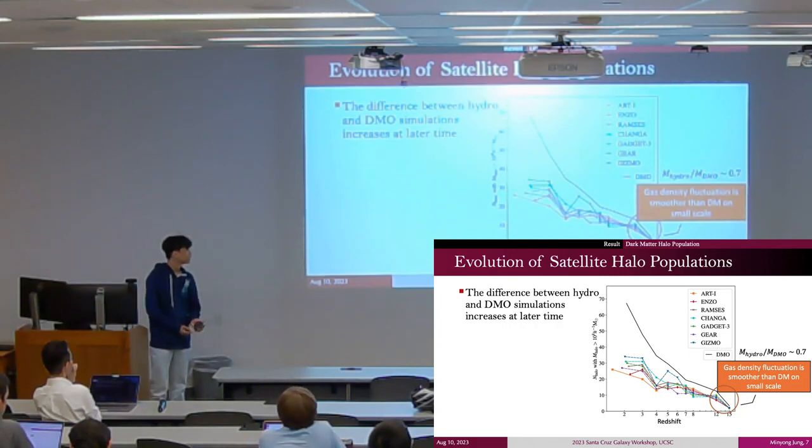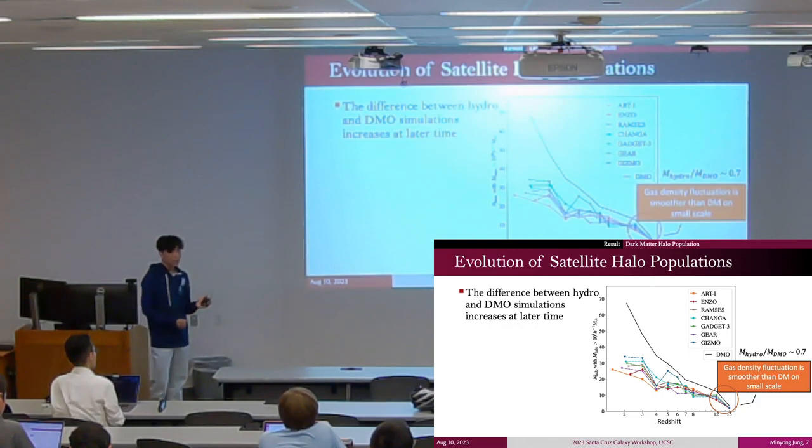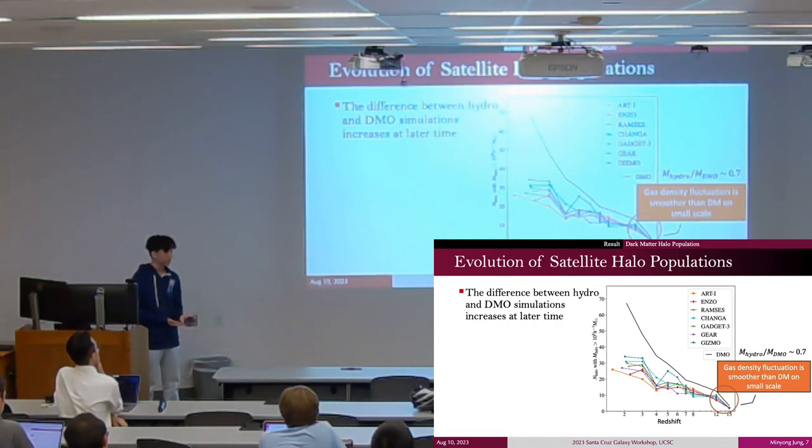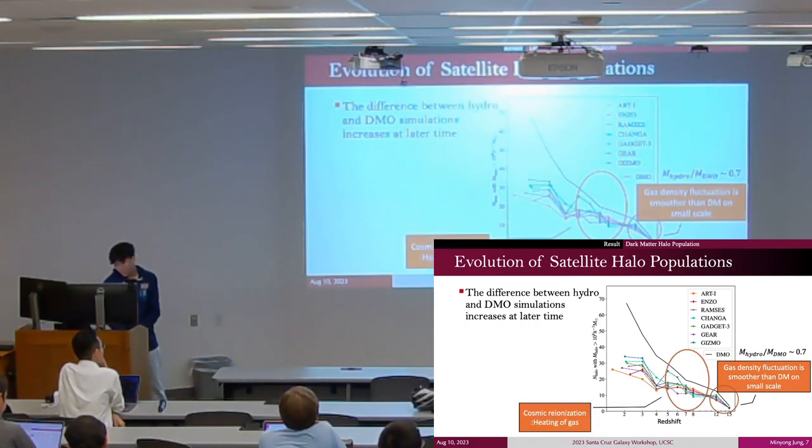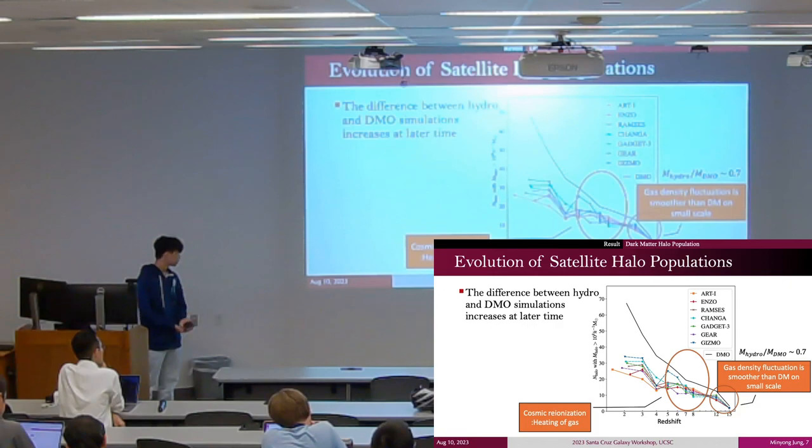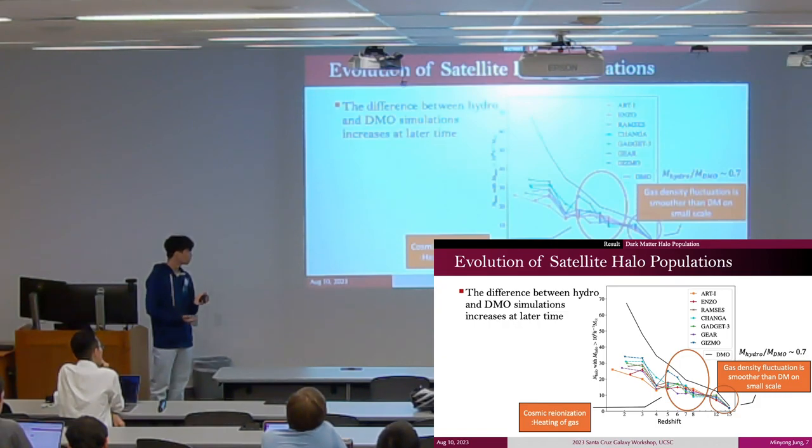This is because gas density fluctuation is much smoother than dark matter on a smaller scale. We observe that the dark matter mass is reduced by a factor of 0.7 in hydrodynamic simulations due to baryonic physics. After z=8 to 5, cosmic reionization plays an important role in preventing the growth of satellite halos.